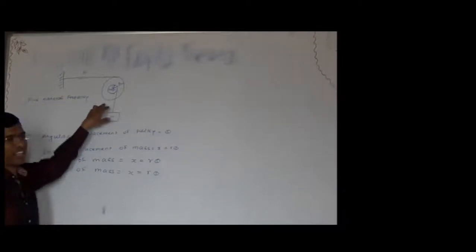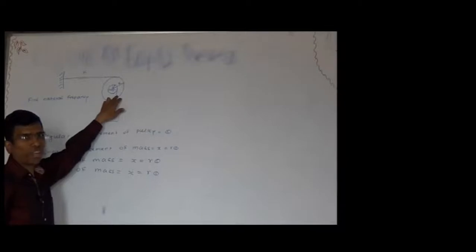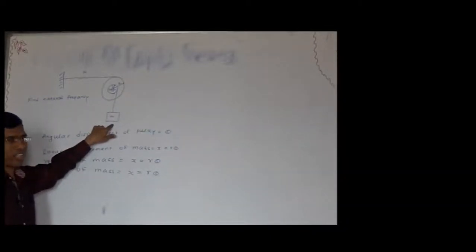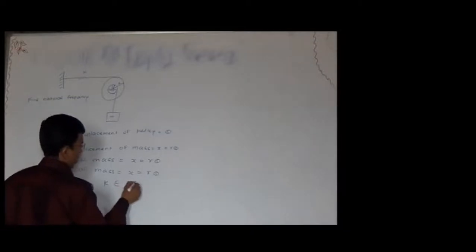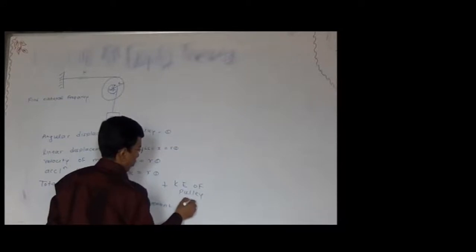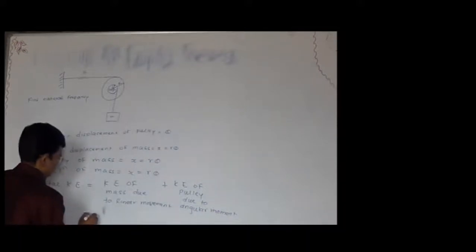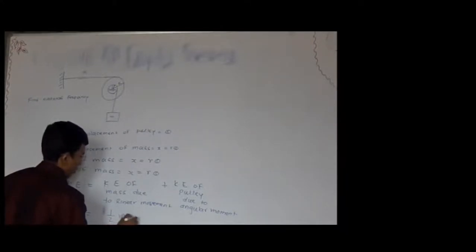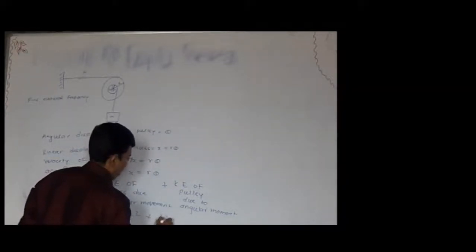Kinetic energy is present in both the mass and the pulley, because motion occurs in the mass as linear motion and in the pulley as angular motion. So total kinetic energy equals kinetic energy of mass due to linear motion plus kinetic energy of pulley due to angular motion. It is indicated by one-half m·x-dot-squared plus one-half I·theta-dot-squared.